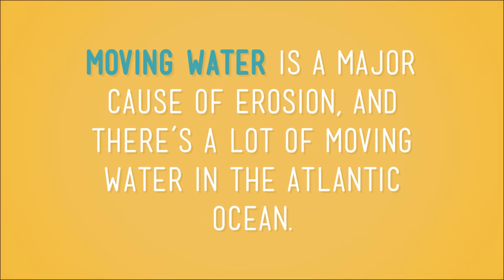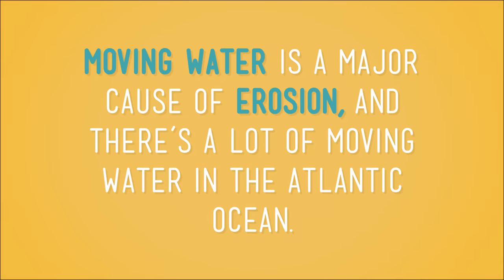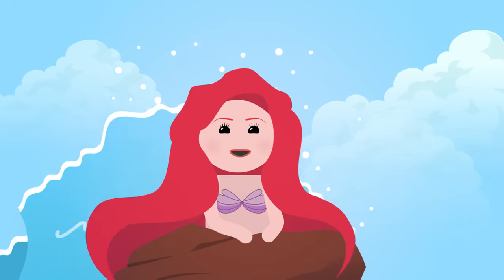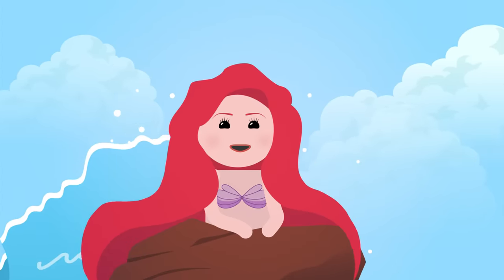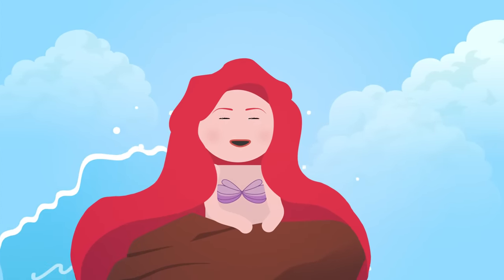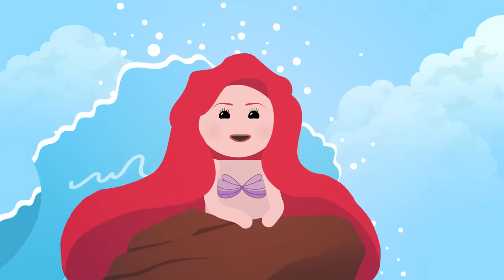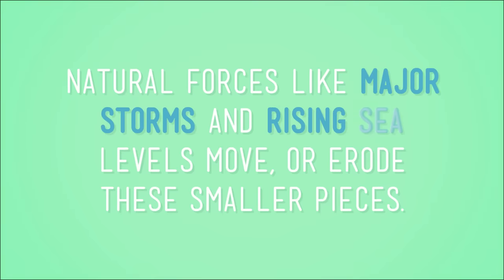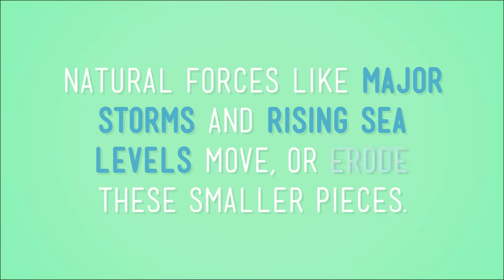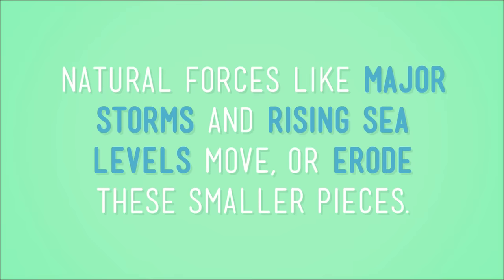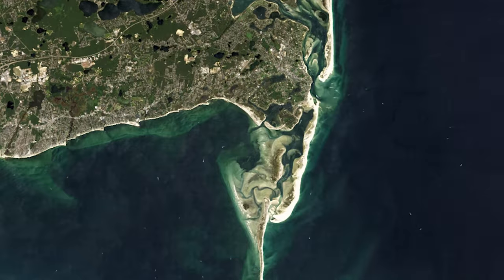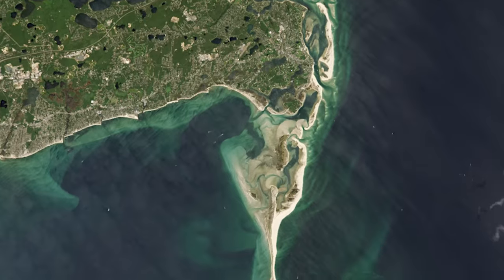Moving water is a major cause of erosion, and there's a lot of moving water in the Atlantic Ocean. The intense energy of ocean waves crashing on shore causes pieces of the rocky, sandy coastline to break into smaller pieces, or to weather over time. Then, natural forces like major storms and rising sea levels move or erode these smaller pieces. Day to day, you might not notice any dramatic changes, but over the course of 30 years, as these pictures show, coastlines can change a lot.